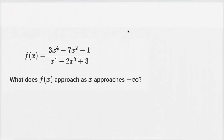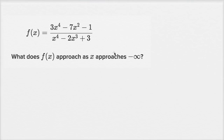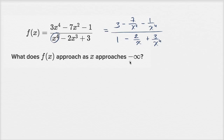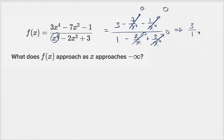What does f of x approach as x approaches negative infinity? Let's divide all terms by the highest degree in the denominator, x to the fourth. Three x to the fourth divided by x to the fourth is three, minus seven over x squared, minus one over x to the fourth, all over one minus two over x plus three. As x approaches negative infinity, all the terms with x in the denominator go to zero, and we're left with three over one, which is three.